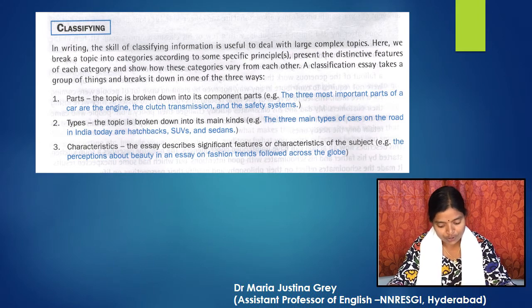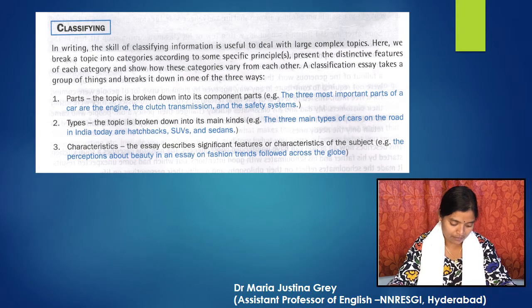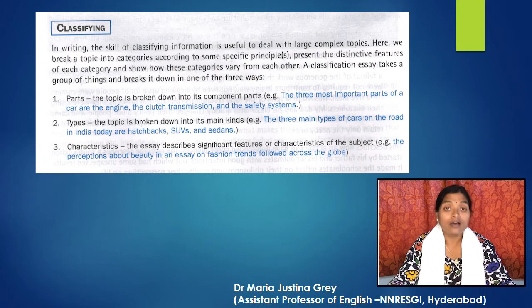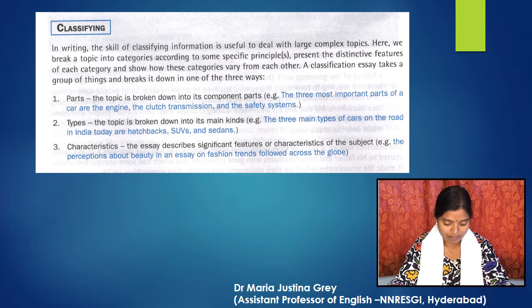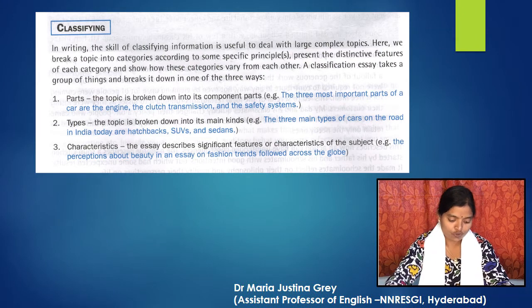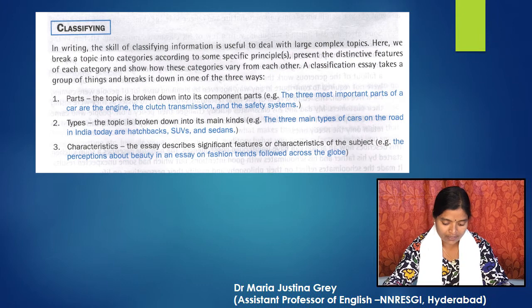A classification essay takes a group of things and breaks it down in one of three ways. 1. Parts: the topic is broken down into component parts. For example, the three most important parts of a car are the engine, the clutch transmission, and the safety systems.